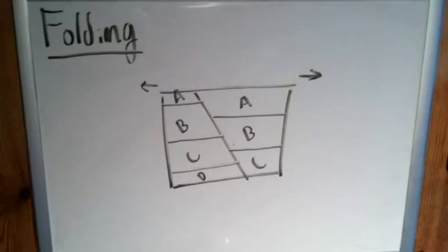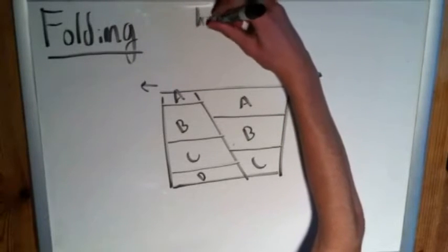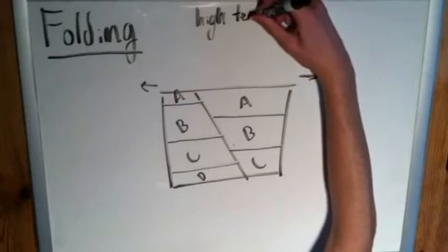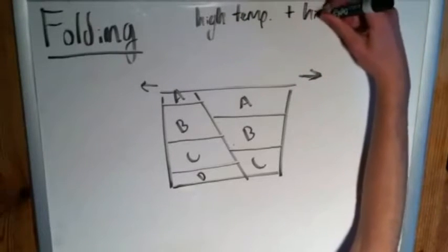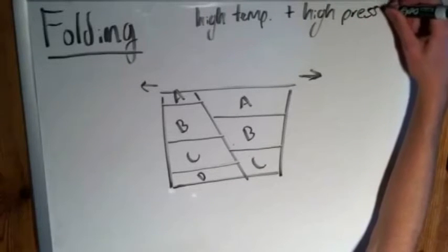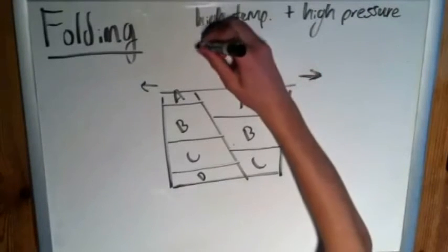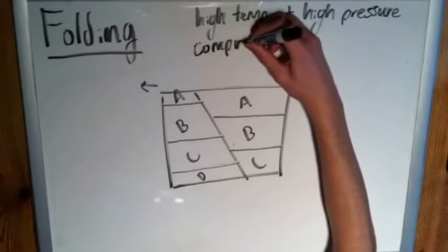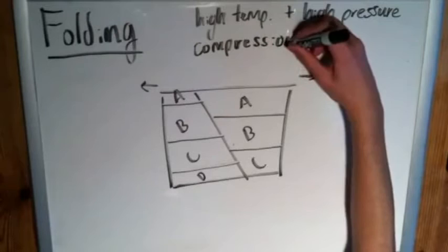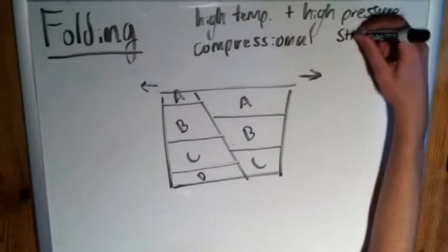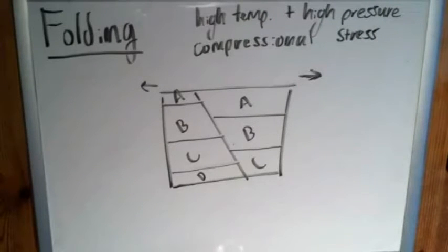Meaning it can occur at any plate boundary, and also it has to be under very high pressure and low temperatures, right? Hopefully that's review, otherwise you can go watch a video on faulting. But folding is different in that it occurs at high temperatures and high pressures. So folding, we need high temperatures in addition to the usual high pressures, and also folding can only occur under compressional stress, meaning effectively it almost always occurs at convergent plate boundaries as opposed to faults which can occur at any plate boundaries.